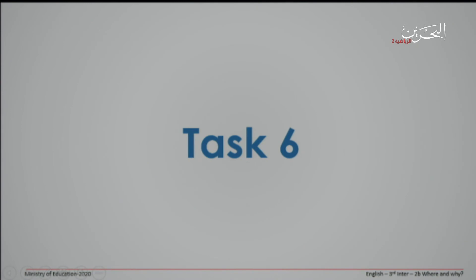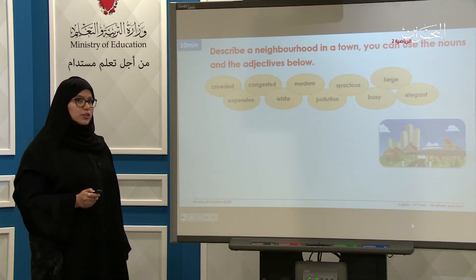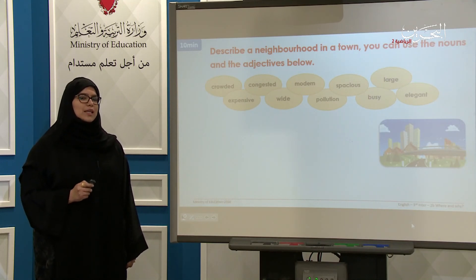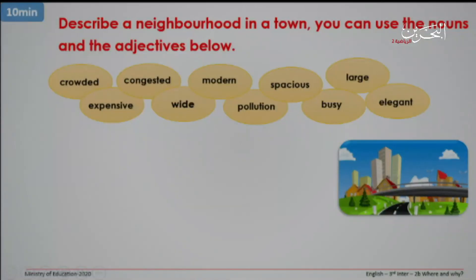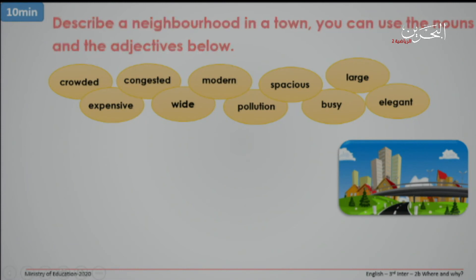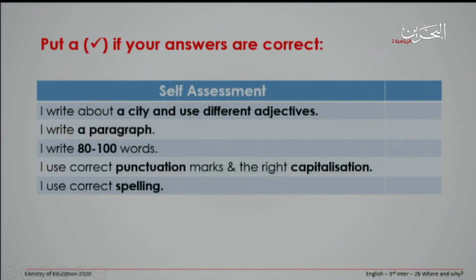Now it's your turn to write a description of a neighborhood, but in a town. You may use the words, nouns and adjectives here: crowded, congested, modern, spacious, large, expensive, wide, pollution, busy, and elegant. You have 10 minutes to complete your task. Make sure you follow the criteria: write about a city and use different adjectives we've learned today, write a paragraph between 80 to 100 words, use correct punctuation marks and the right capitalization, and use correct spelling.